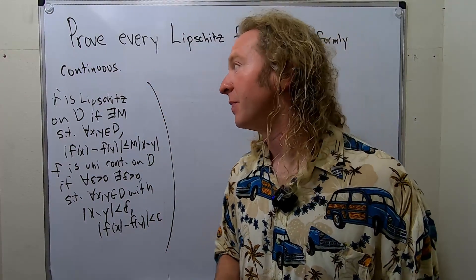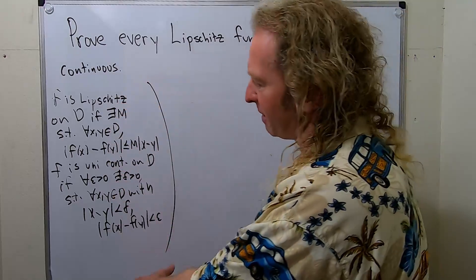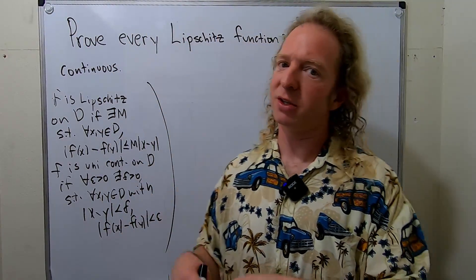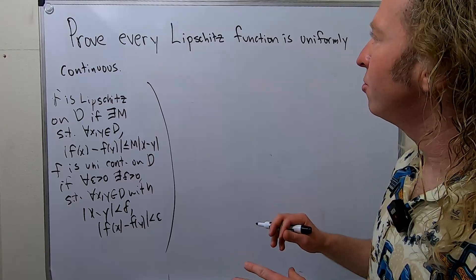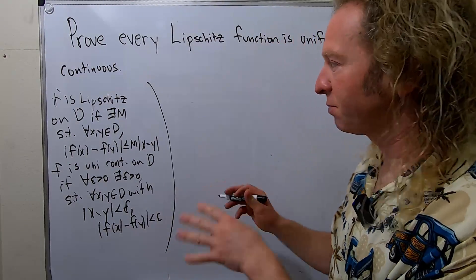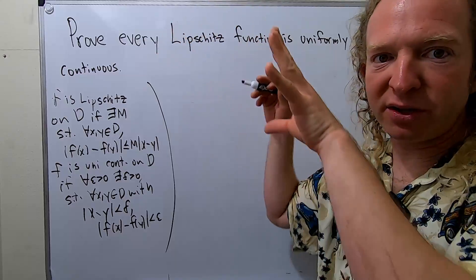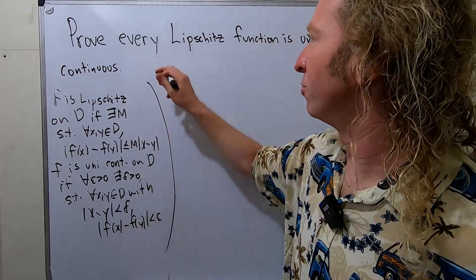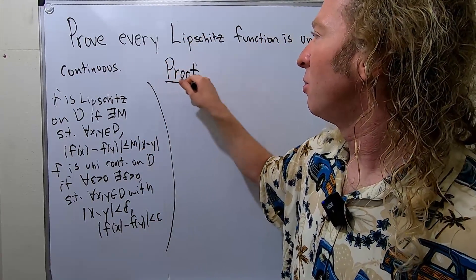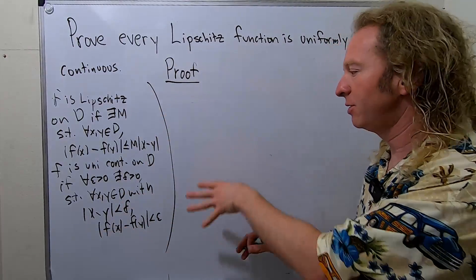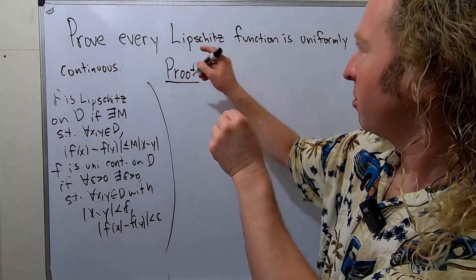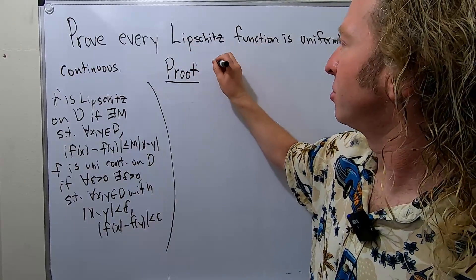That's what it means for a function to be uniformly continuous on D. It's almost clear — people say it's really easy, it's clearly true. If you look it up in a book it'll say it's obvious. But let's go through the proof carefully and prove that every Lipschitz function is uniformly continuous. If I need to do some work on the side I'll call it scratch work.